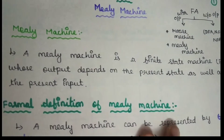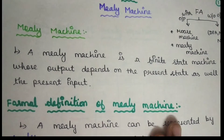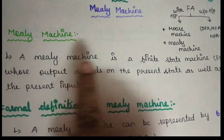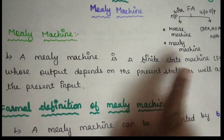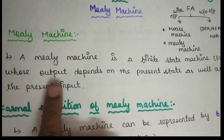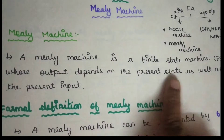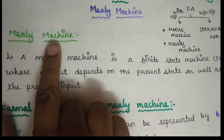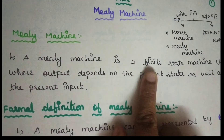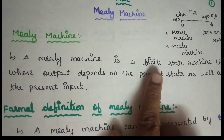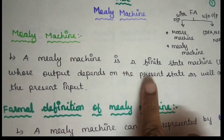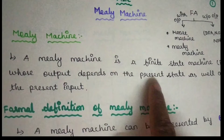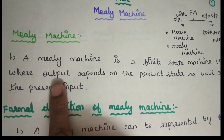In this video, we will talk about the Mealy machine. The Mealy machine is a finite state machine whose output depends on both the present state as well as the present input. That means in a Mealy machine, the output is a function of present state plus present input.